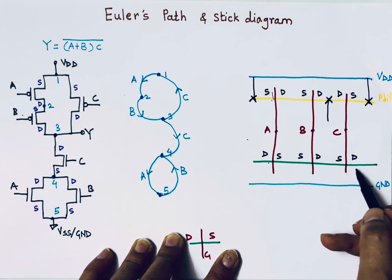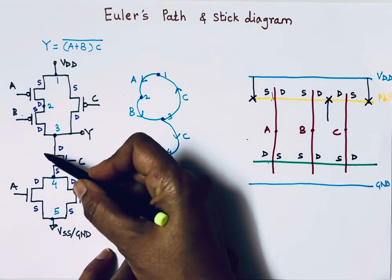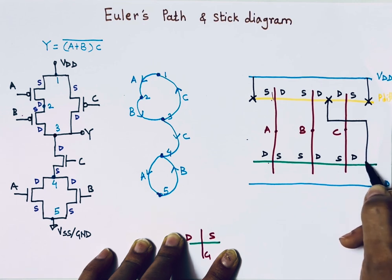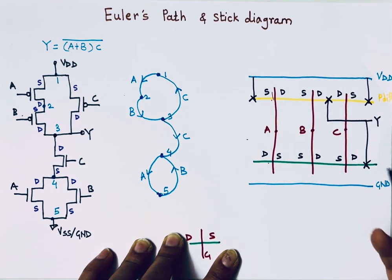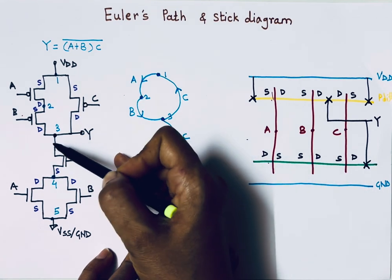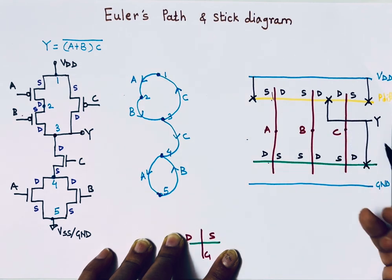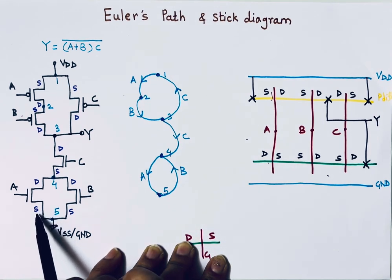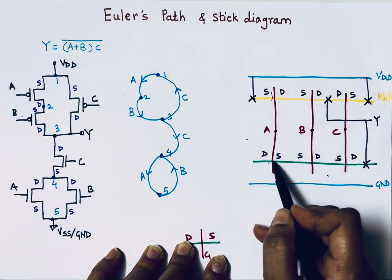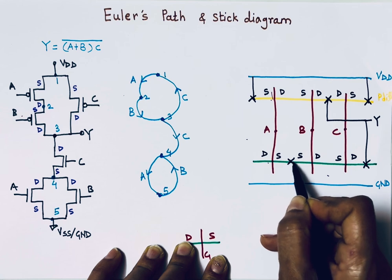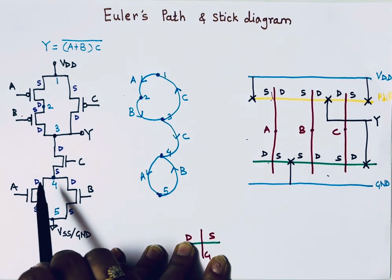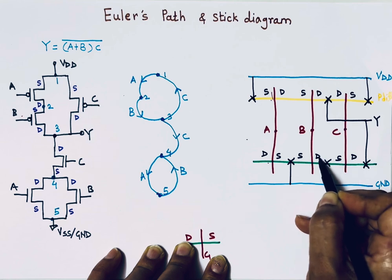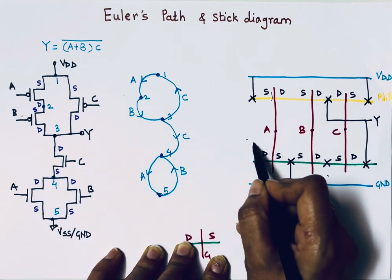For the pull-down network, the drain of NMOS C is connected to output Y. The source terminals of NMOS A and NMOS B are shorted and connected to VSS. Source of NMOS C and drain of NMOS B connect to the drain of NMOS A. The output Y is taken from the drain of NMOS C.